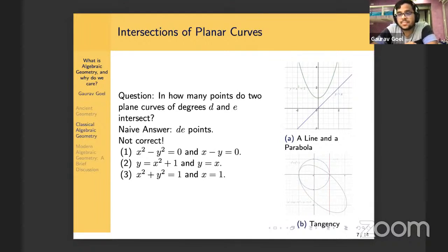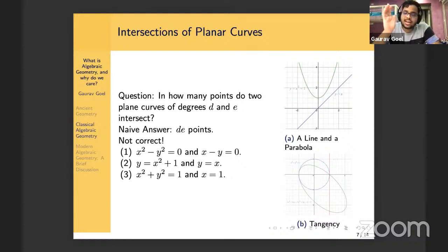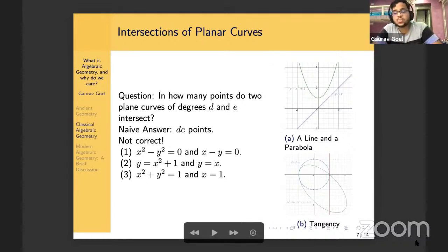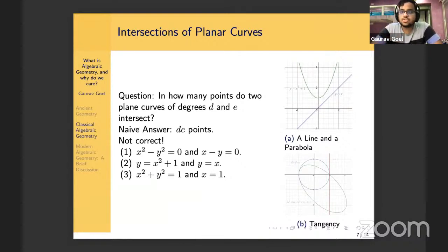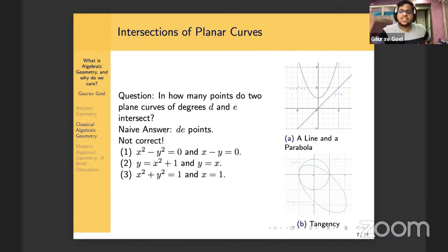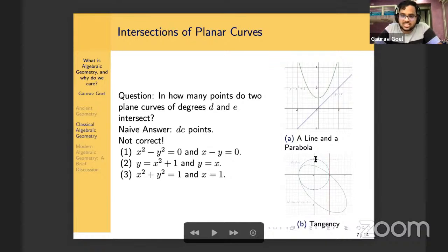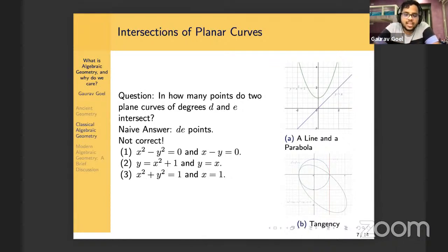The next thing you have to account for is multiplicity. Take the circle x² + y² = 1 and the line x = 1 — that line intersects the circle in just one point, (1, 0), because plugging x = 1 gives y² = 0, which even over the complex numbers has just one solution. The problem is that if you move the line a little bit to the left, you'd actually have two points of intersection — those two points are coalescing into a single point of tangency. This is not just a problem with lines; you can also have two curves of higher degree be tangent to each other.